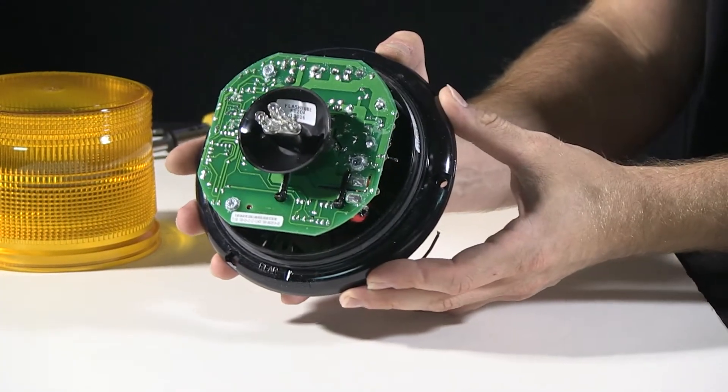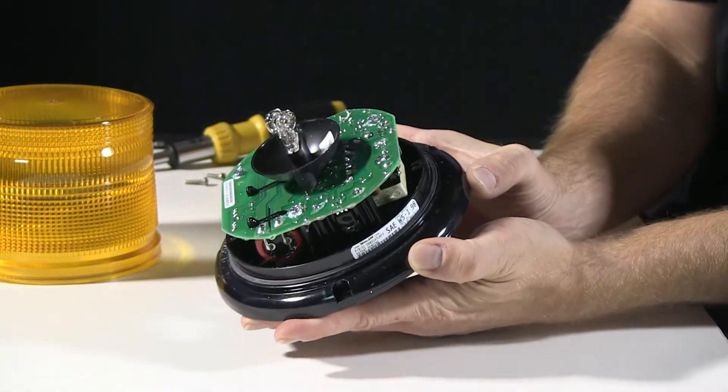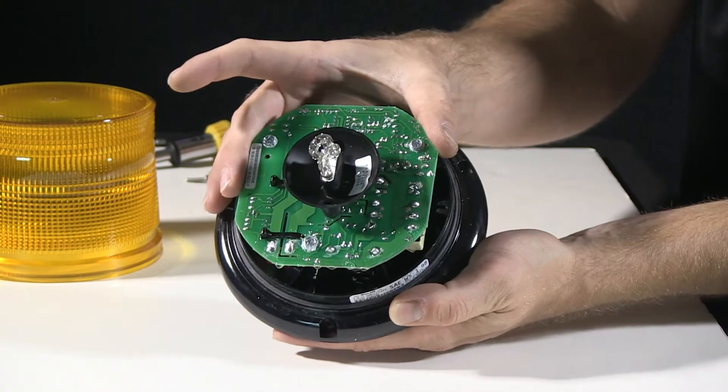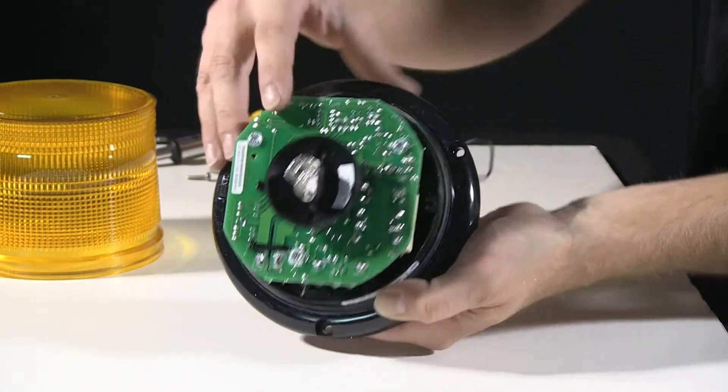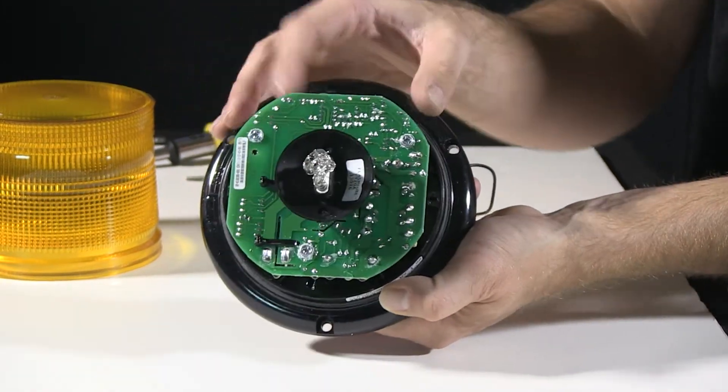So here's a close-up at the inside of what your strobe tube and power supply assembly looks like from the top, and I'll remove this from the base to give you a bottom view.